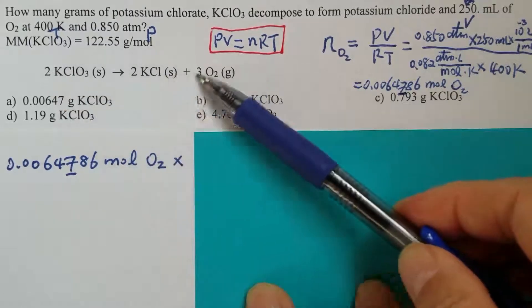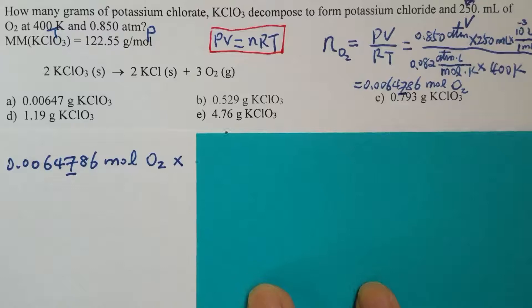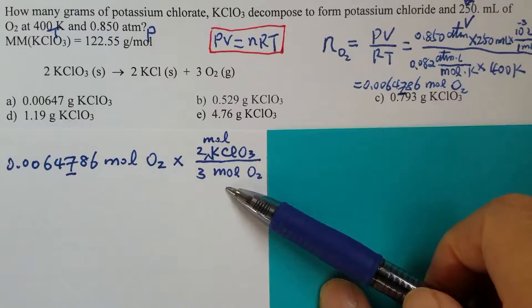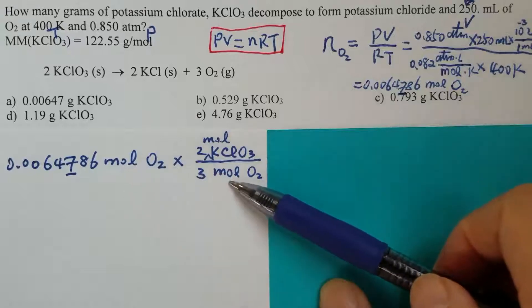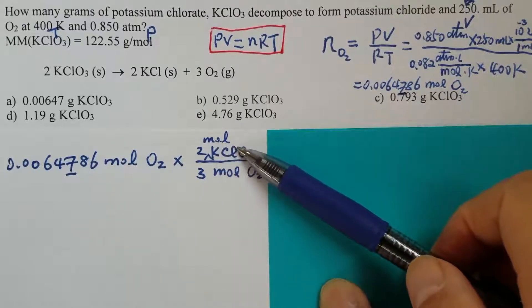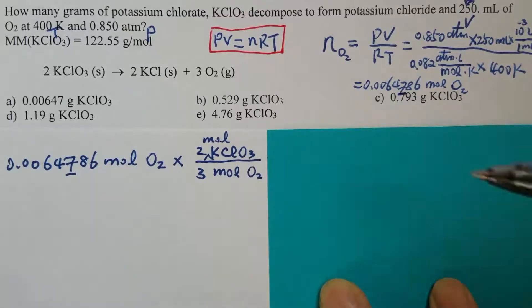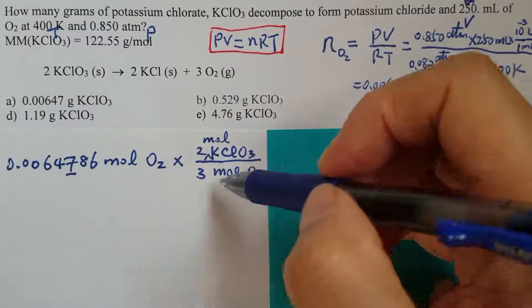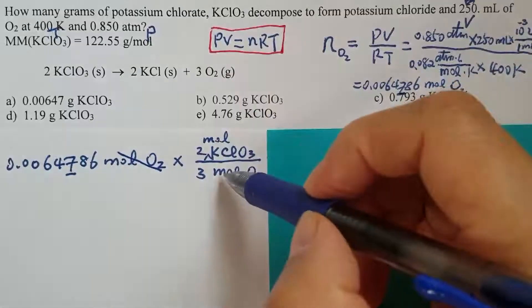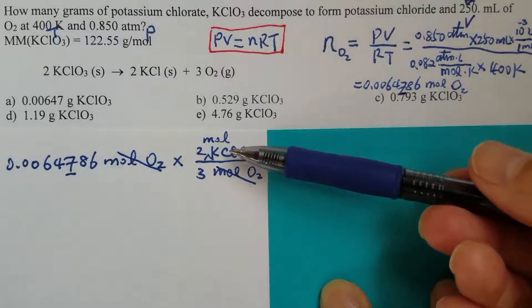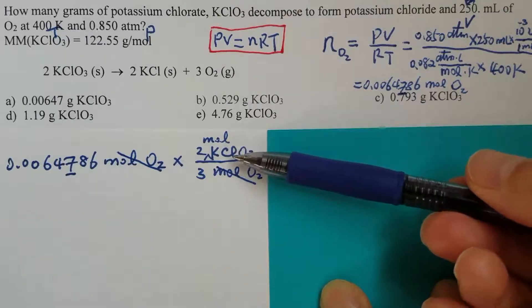Converting from moles of oxygen to moles of potassium chlorate. Then moles of oxygen can be cancelled. Now we get the number of moles of potassium chlorate.